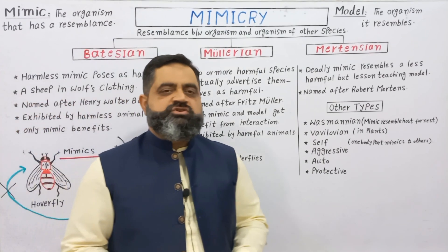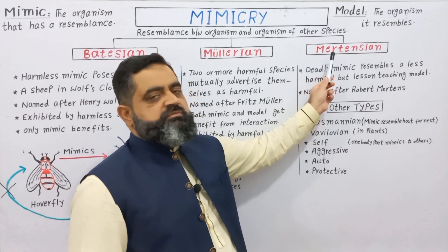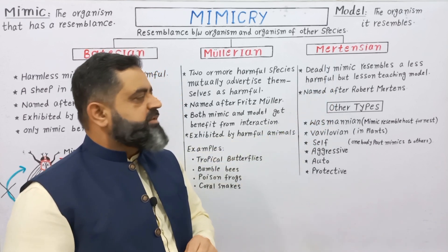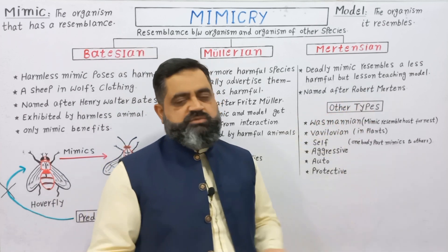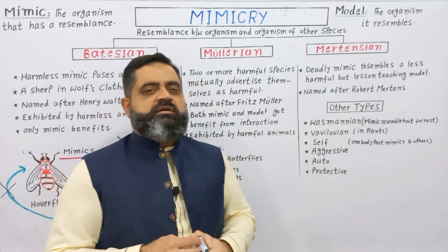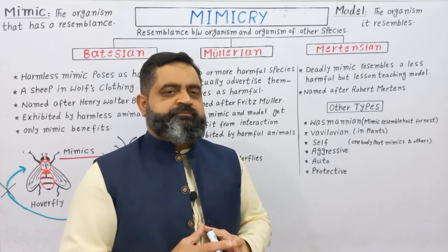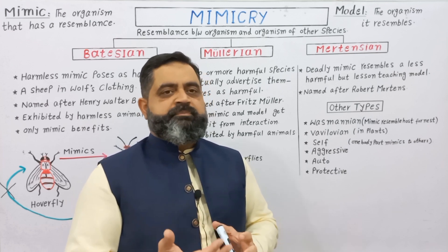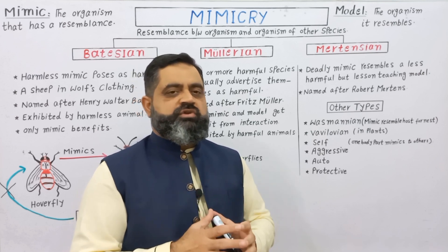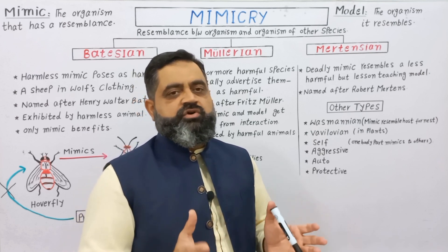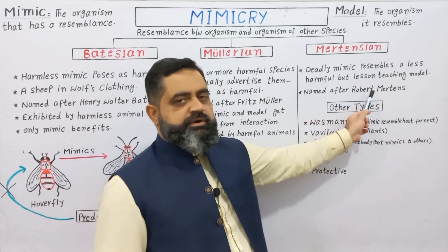The third type of mimicry is Mertensian Mimicry. In this mimicry, a deadly mimic resembles a less harmful but lesson-teaching model. A very poisonous, very dangerous animal mimics a less poisonous, less harmful one. But when a predator attacks those animals, it teaches them a lesson that this is a very harmful animal, so stay away. This mimicry has been named after Robert Mertens.